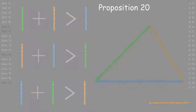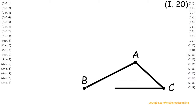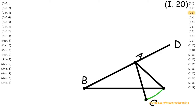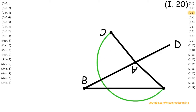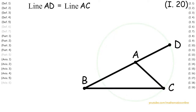To begin this proposition, we are given triangle ABC. First, we extend line BA to an arbitrary point D. With line AC and line AD, we apply Proposition 3 so that line AD is congruent to line AC.